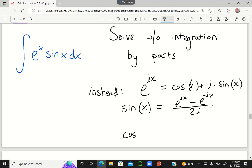And cosine of x is equal to e to the power i x plus e to the power negative i x divided by 2.